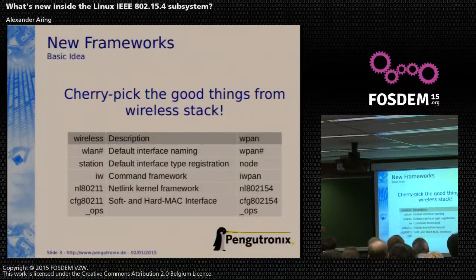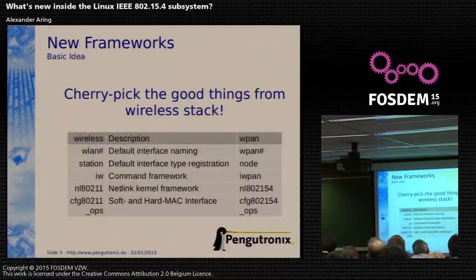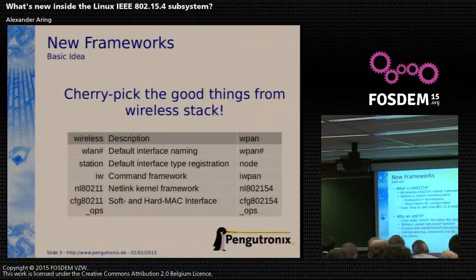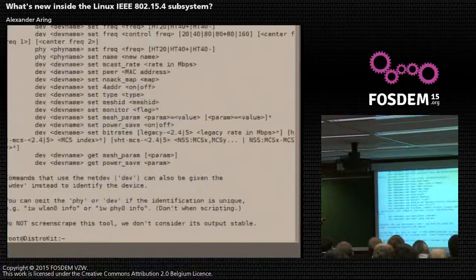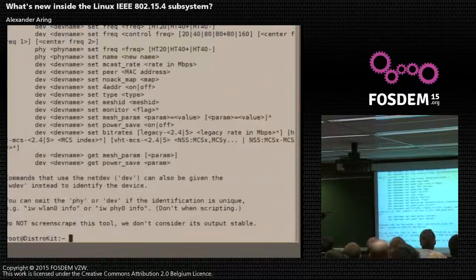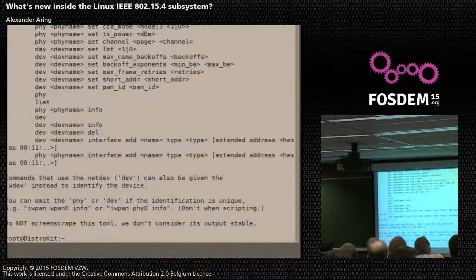Wireless has the same paradigm of doing soft MAC and hard MAC interfaces. Transceivers can be accessed by making hard MAC stuff on the transceiver side or doing soft MAC on the kernel side. To show you exactly what this means, I will demonstrate iwpan. I type iw — that's the normal wireless command — you can see set frequency, name, mcast, rate and so on. And we just type now iwpan and it looks very much the same; it's just with 802.15.4 functionality.